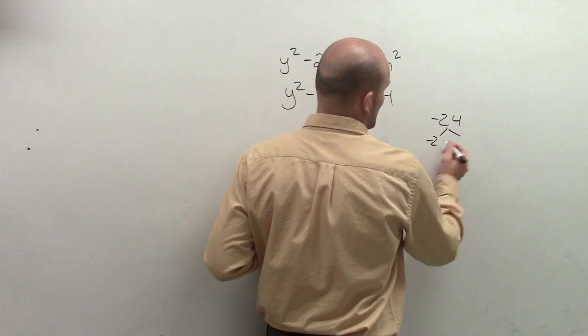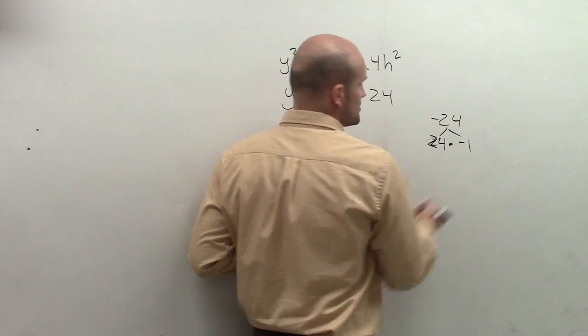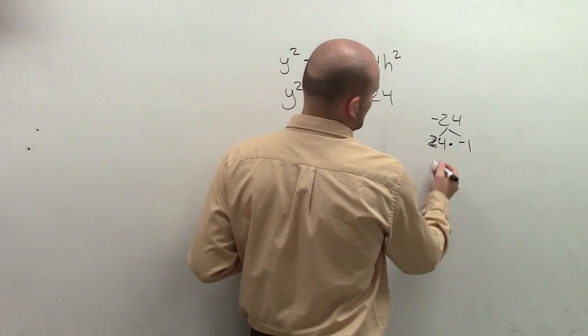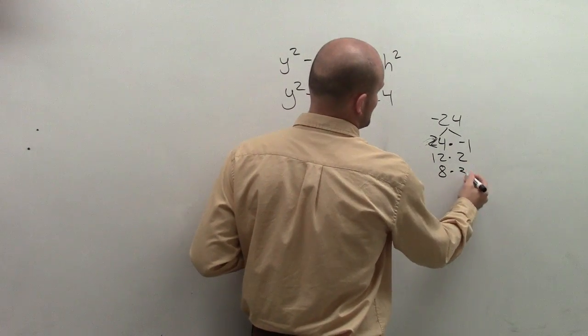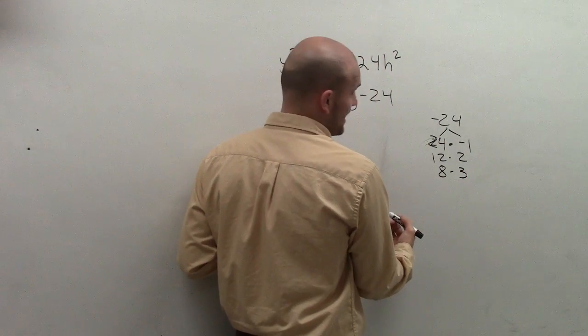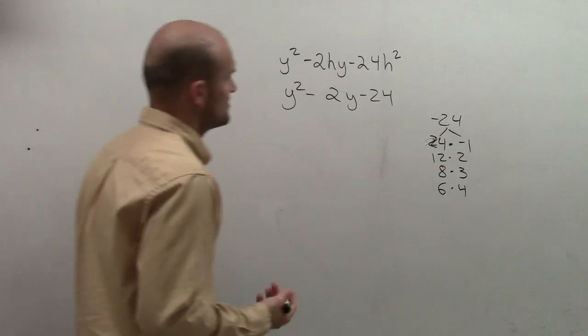I'm just going to do plus or minus because we know one can be positive and one has to be negative. So you can do 24 times 1, 12 times 2, 8 times 3 where one of these is going to have to be negative, and 6 times 4. That's going to be it.